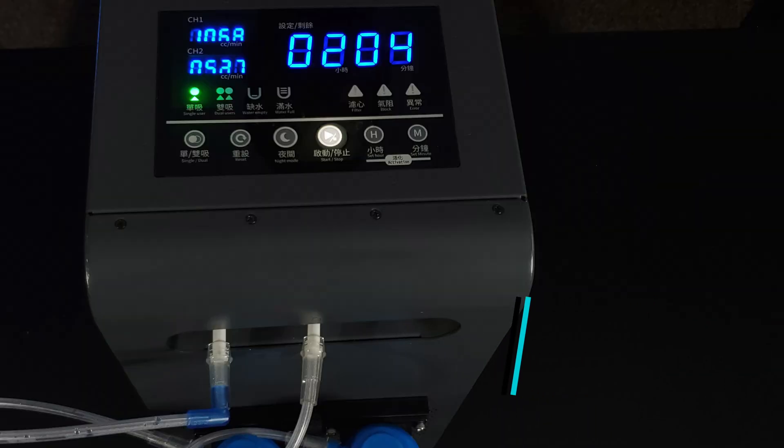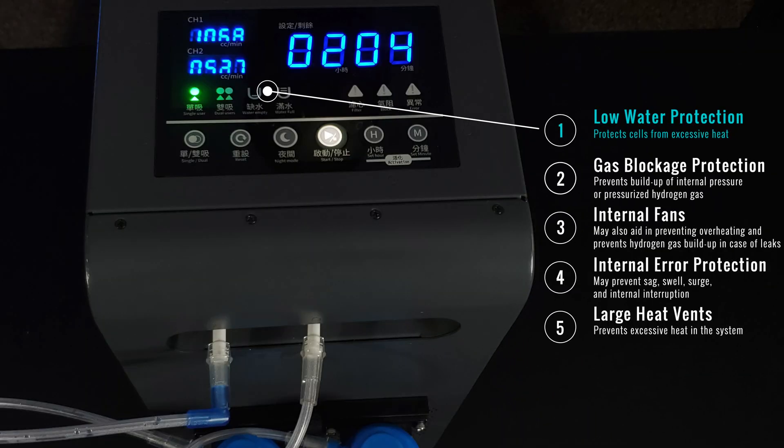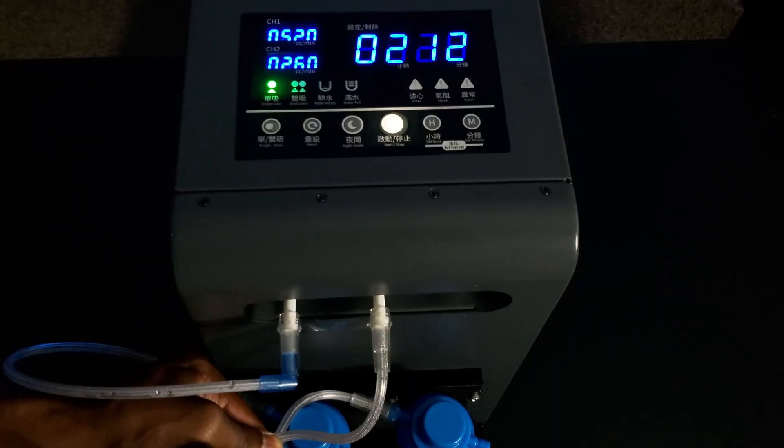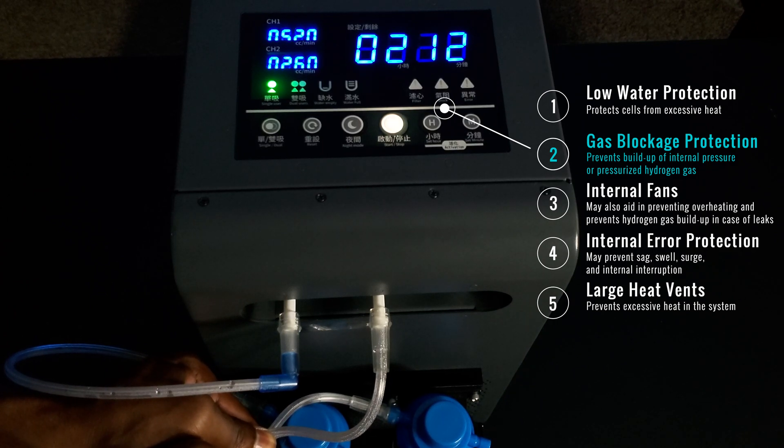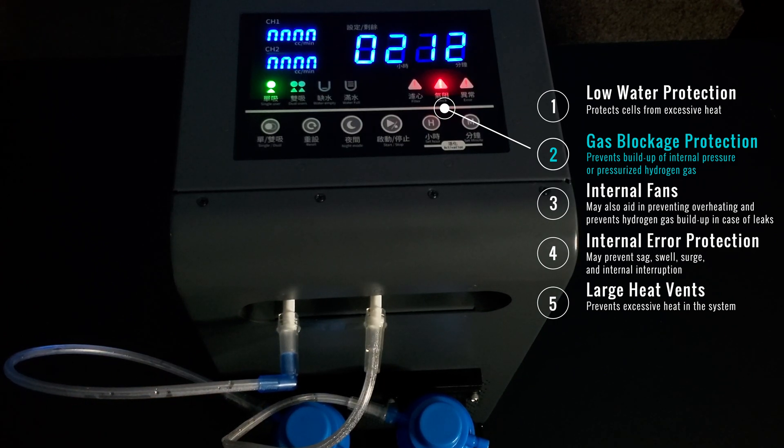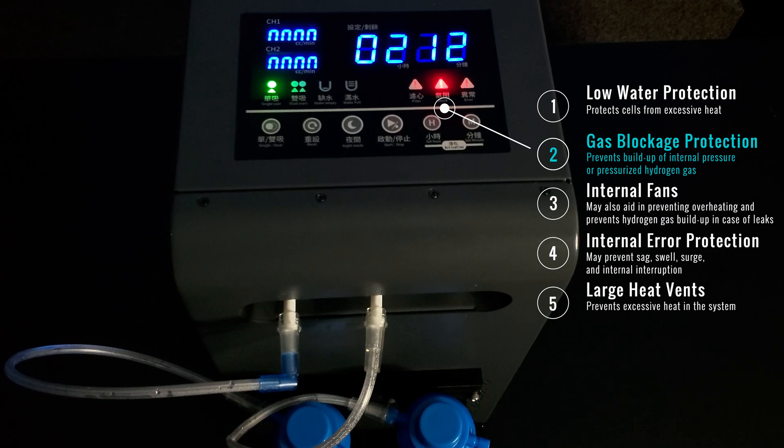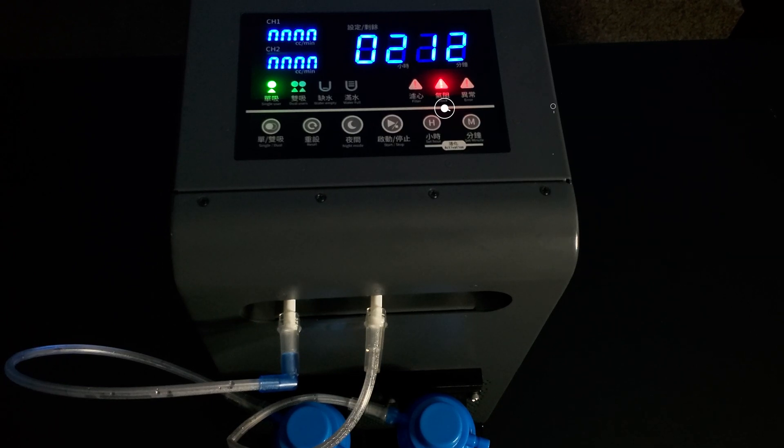So let's go ahead and talk about the safety features with this device. We identified five key safety features with this system. First would be the low water protection. The system notifies you when there's low water within the reservoir. This protects the hydrogen cell from overheating. Next would be the gas blockage protection. This feature prevents any buildup of internal pressure or pressurized hydrogen gas within the system, increasing the safety of the device.